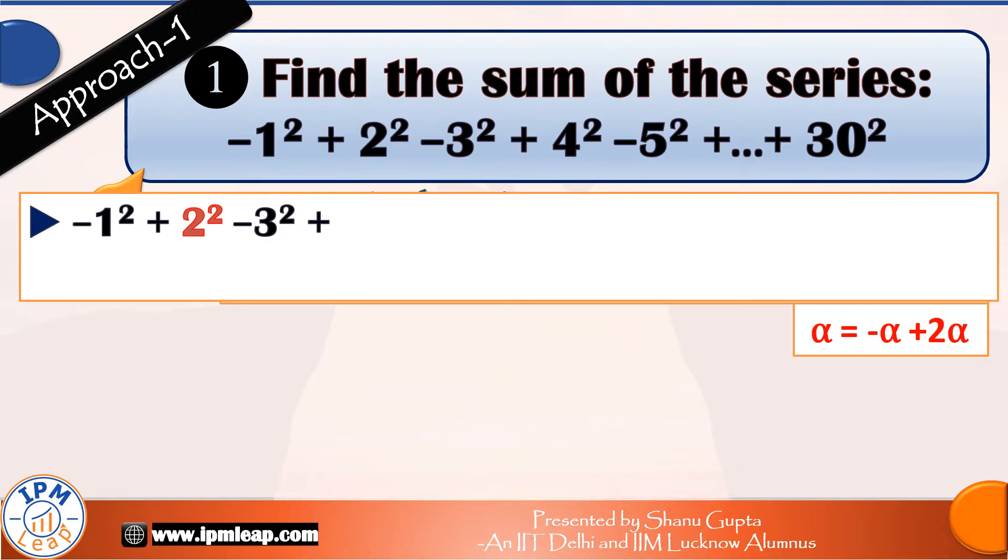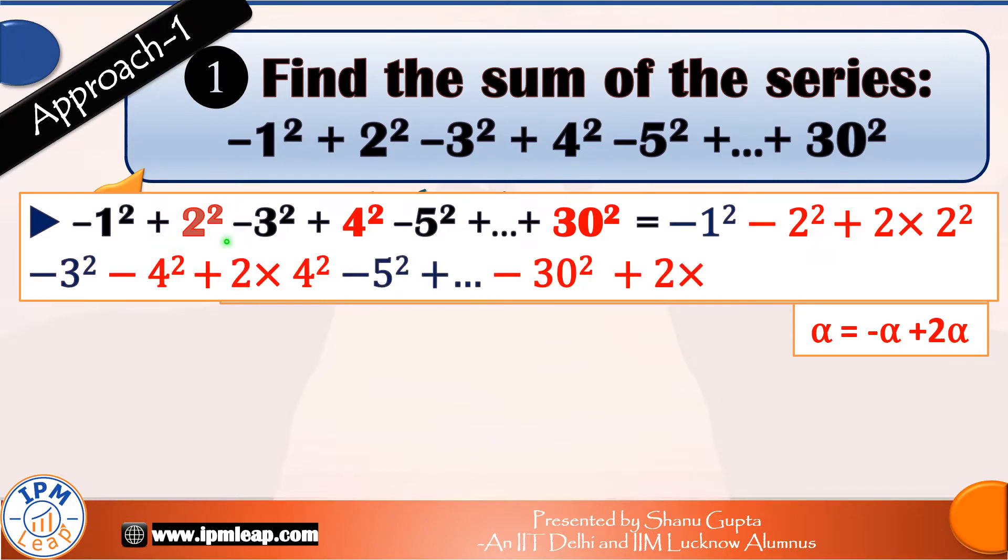We know that any number alpha can be written as alpha equals minus alpha plus 2 times alpha. Using this, we will convert all positive terms, which are the squares of even numbers, to negative sign first. So plus 2 square becomes minus 2 square plus 2 times 2 square, plus 4 square becomes minus 4 square plus 2 times 4 square, and so on. We separate out these two series of minus and plus sign.